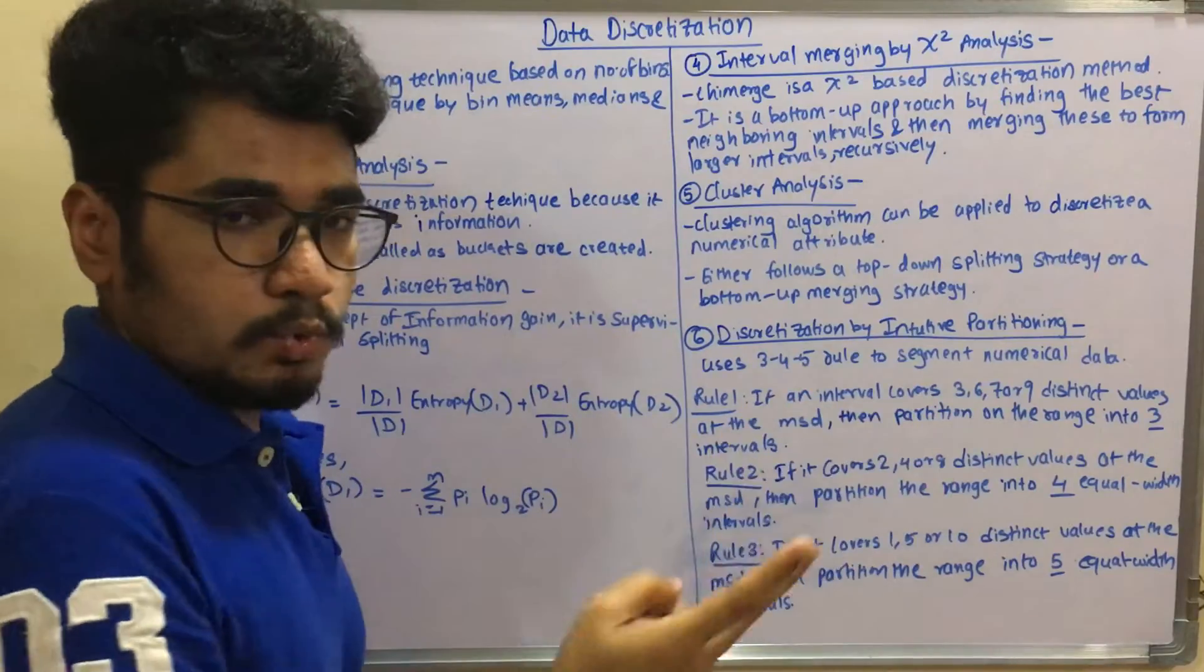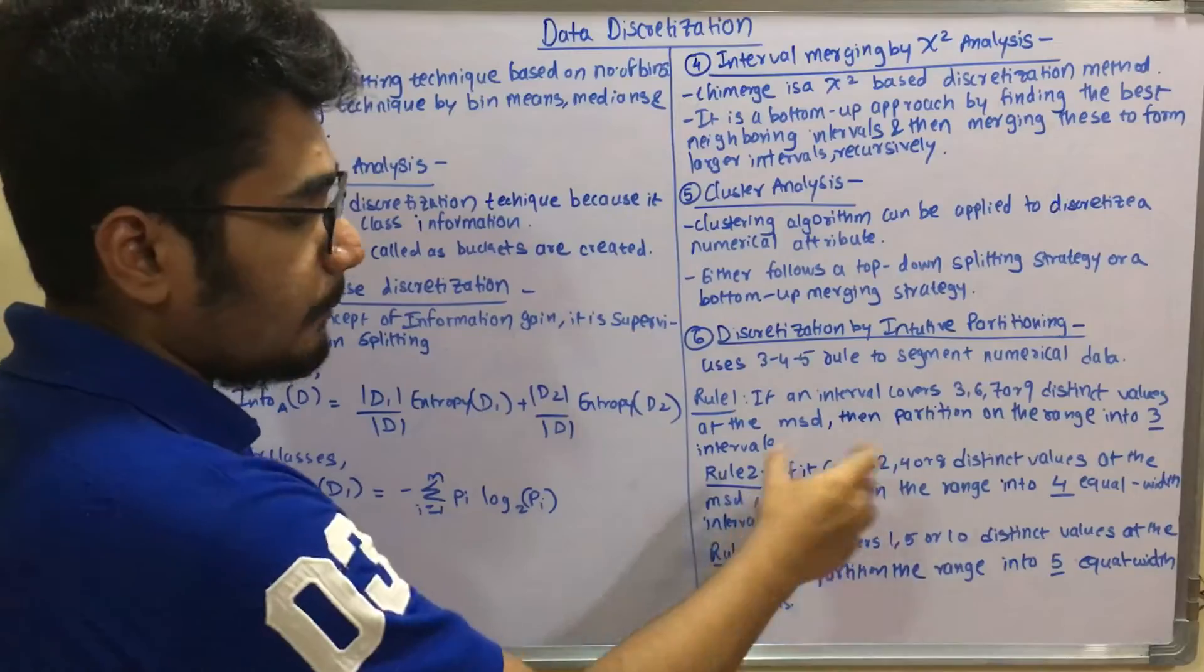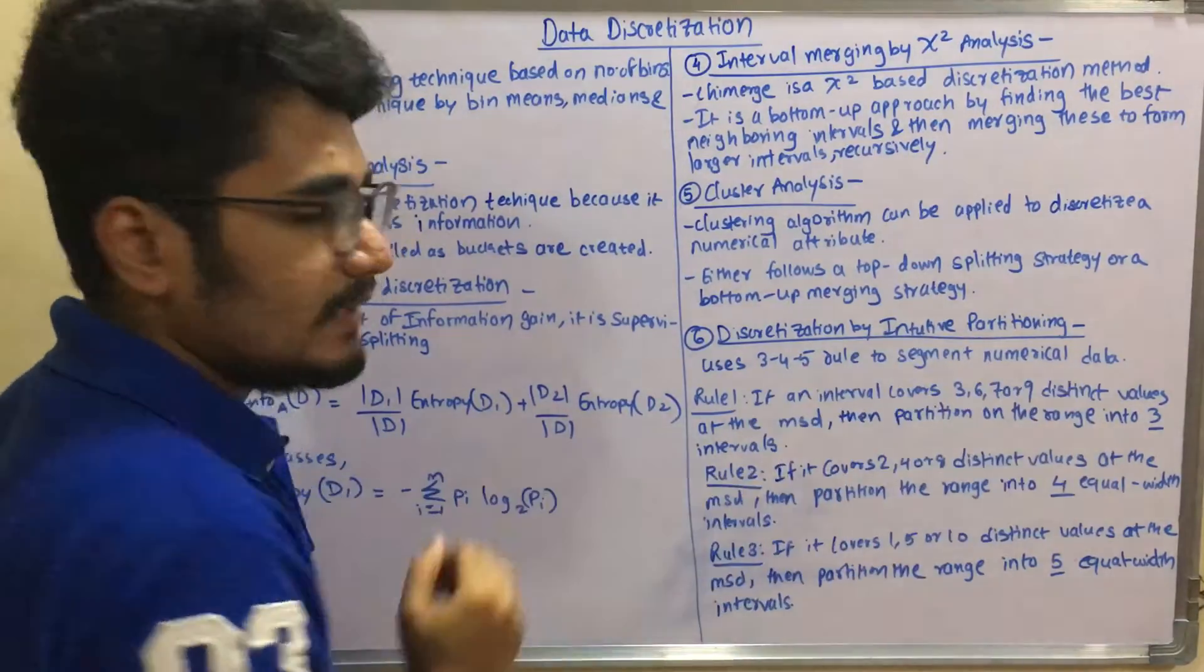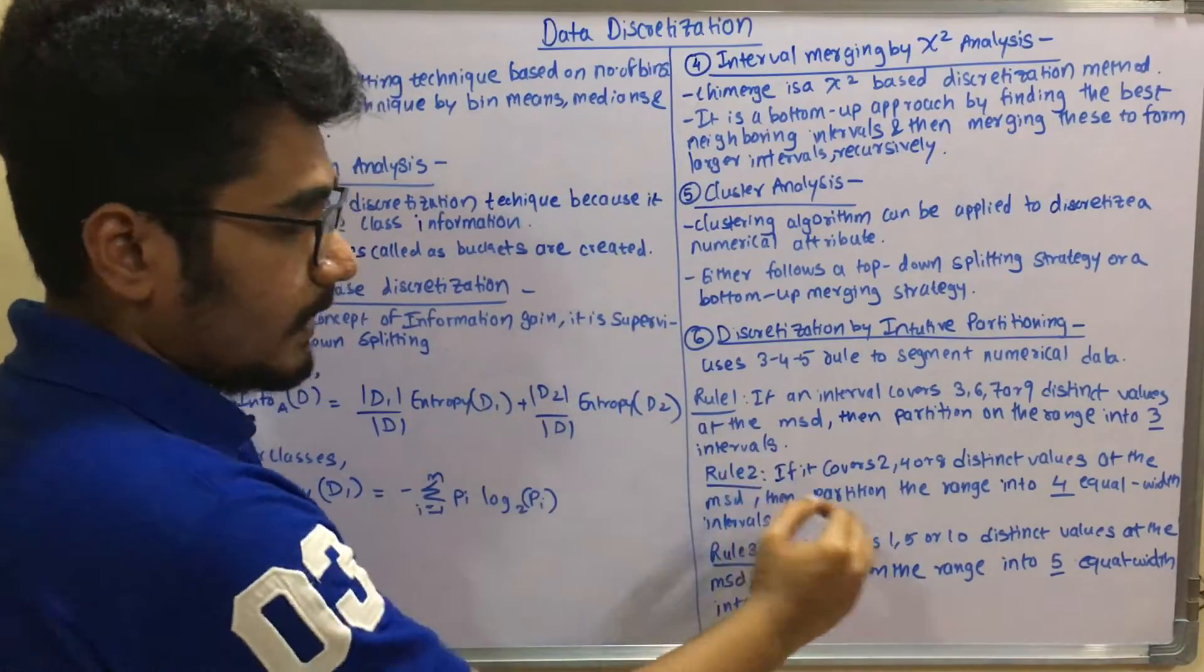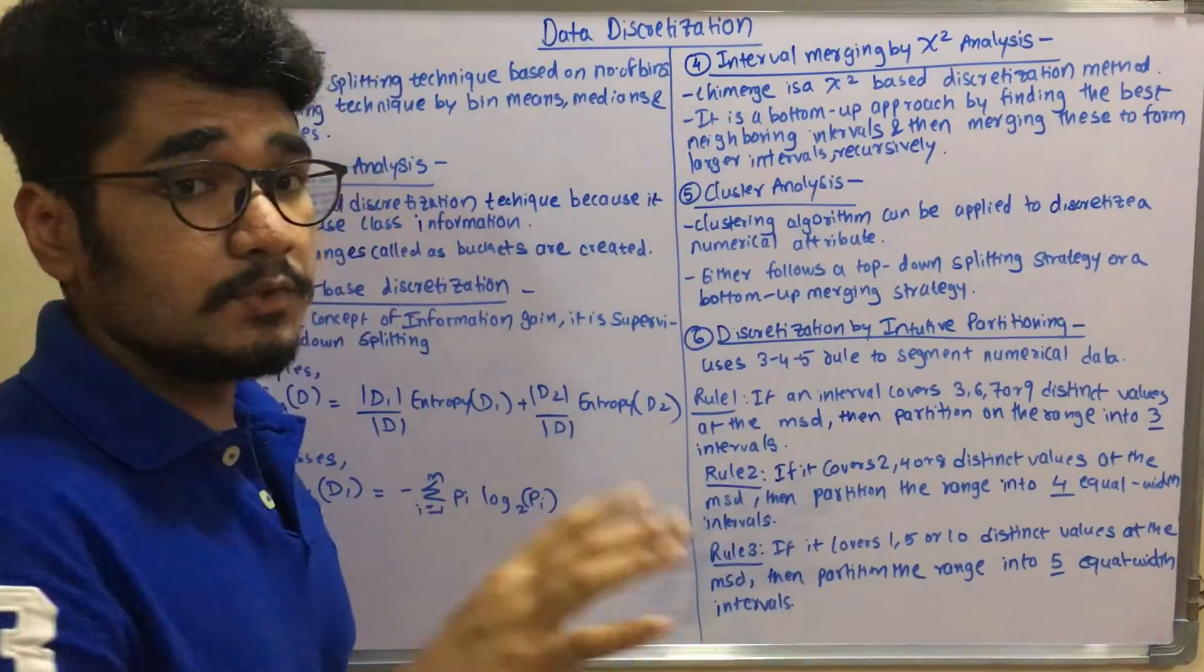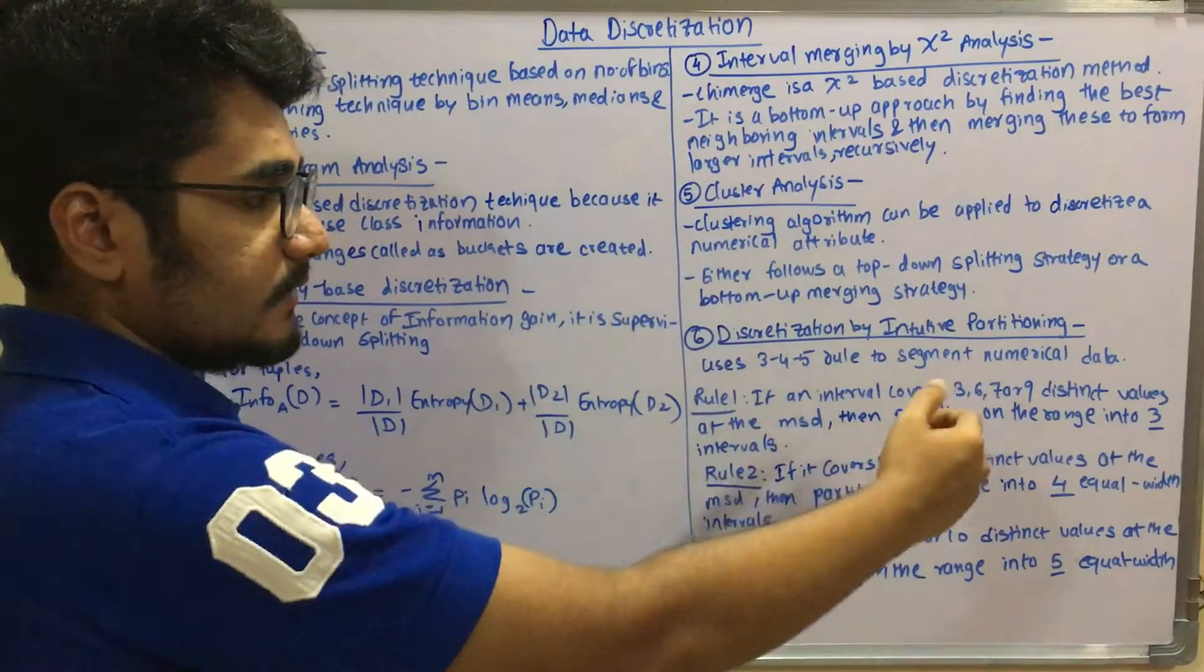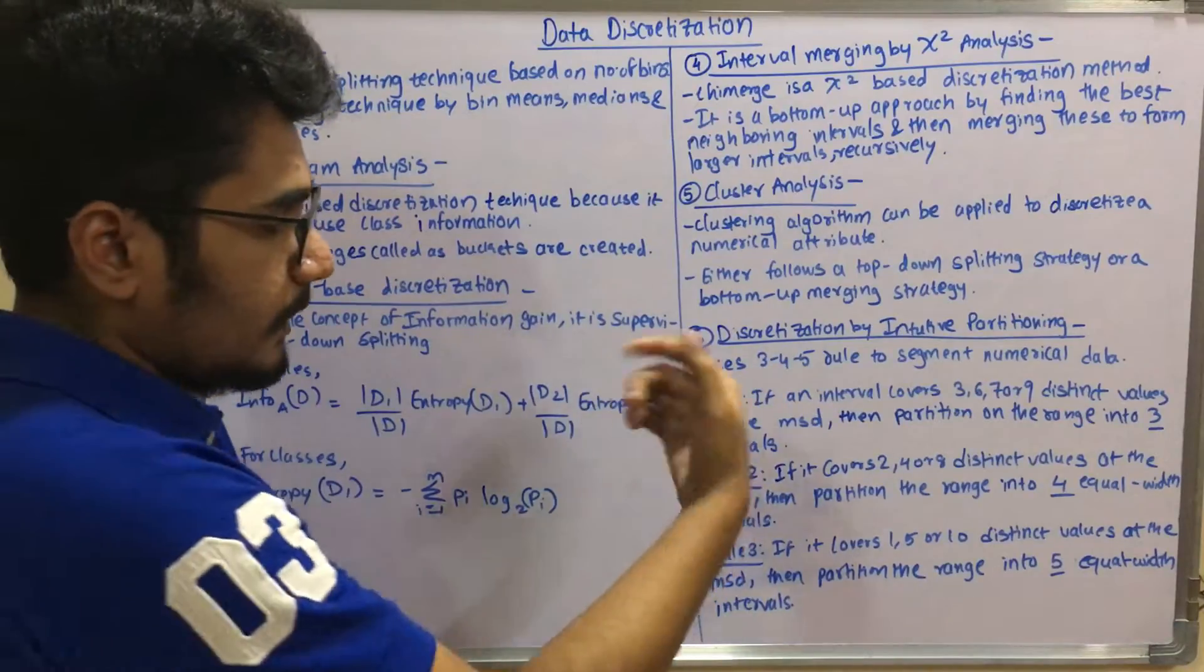Rule two: if it covers two, four, or eight distinct values at the most significant digit, then partition that range into four different equal frequency or equal width intervals. Rule three: if it covers one, five, or ten different distinct values at the most significant digit, then partition the range into five equal width intervals. So data discretization by using intuitive partitioning is basically built on these three rules.